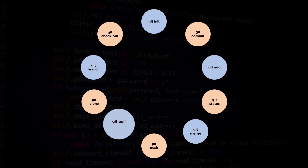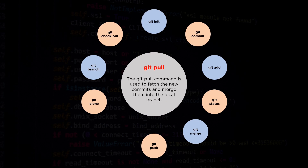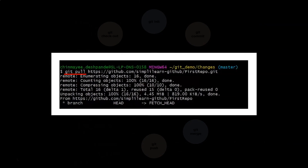Followed by git push, let's have a look at the git pull command. The git pull command is a combination of git fetch followed by git merge. The command is used to fetch and merge the changes from the remote repository to the local repository. The git fetch command downloads content from the remote repository and git merge combines multiple sequences of commits into a single branch. On the screen we can see the git pull command pulling files from a remote repository called the first repo.